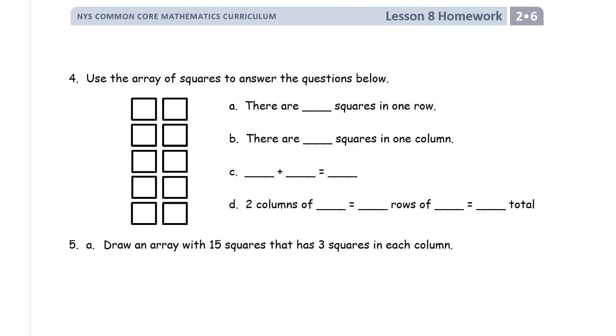Use the array of squares to answer the questions below. So how many squares are in one row? There's 2. How many squares are in one column? There's 1, 2, 3, 4, there's 5.